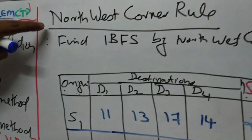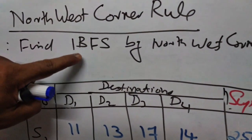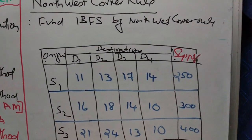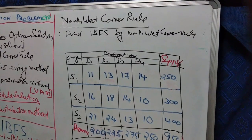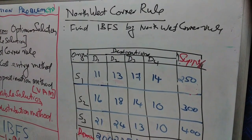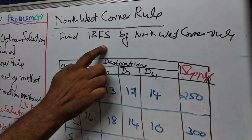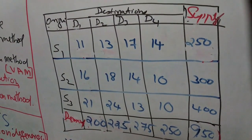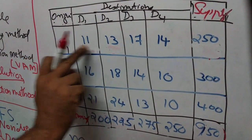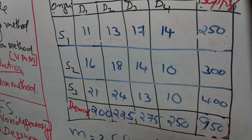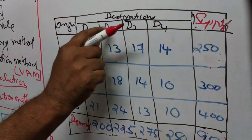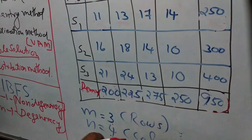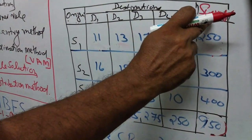I am going to solve the problem by north-west corner rule to find an initial basic feasible solution. We are going to solve the transportation problem by north-west corner rule to obtain an initial basic feasible solution — a solution satisfying supply and demand conditions, not for optimization or minimum cost. This problem consists of three origins: S1, S2, S3 — three supply centers — and four destinations. Number of rows is three and number of columns is four.